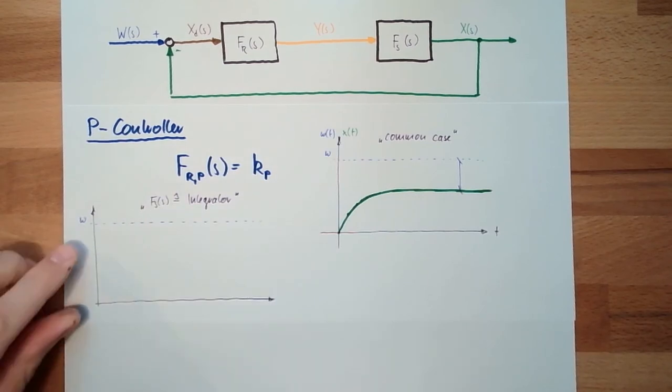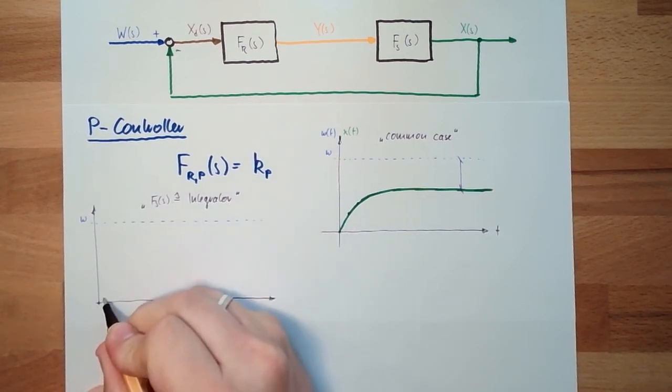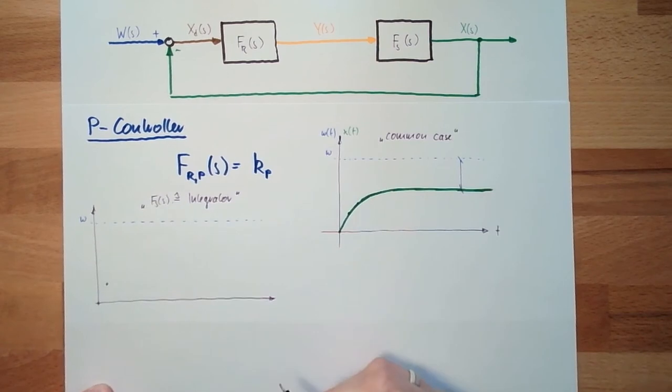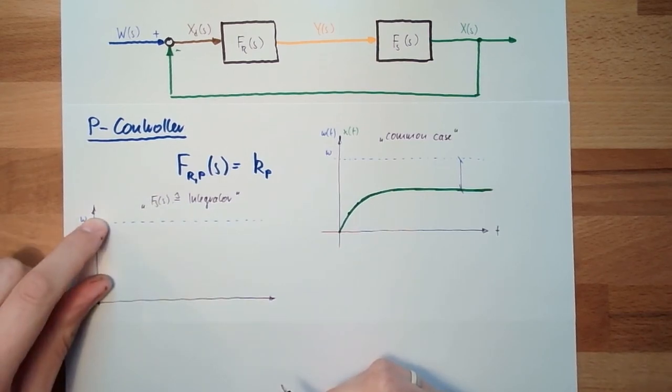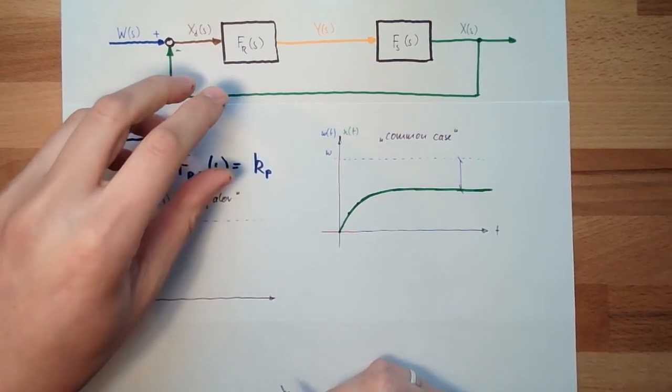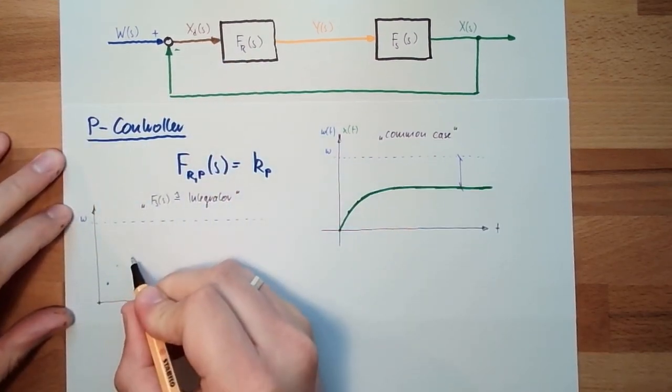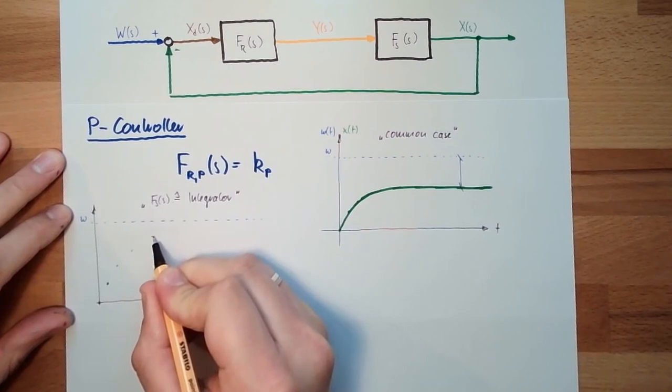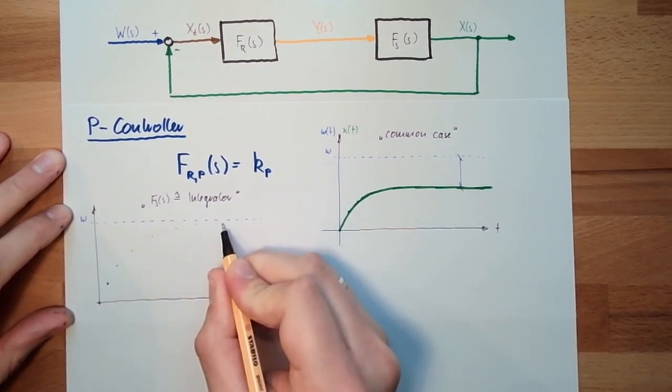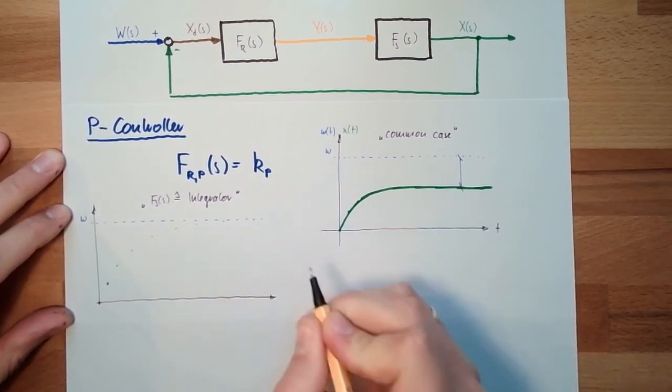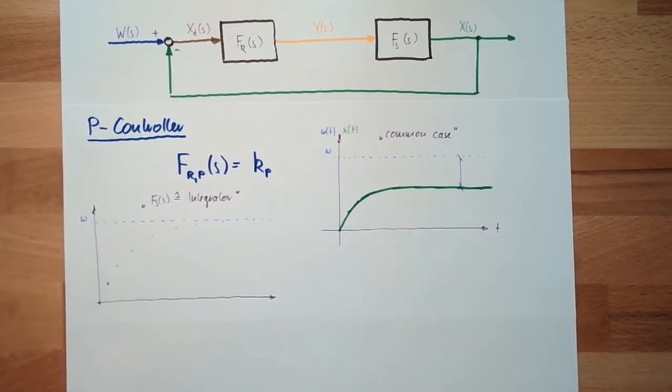At the beginning, we again have a big, big difference. So our X will grow very fast. Then the difference is getting smaller and the regulator will reduce. It's basically the same game. However, this time it will reach. It will reach the end value. Why?